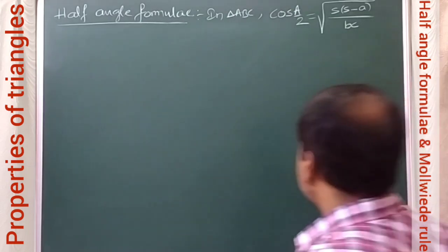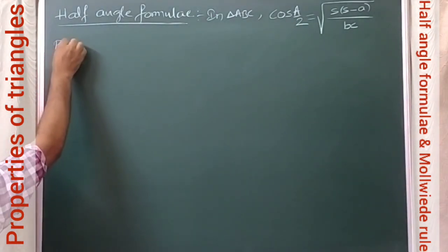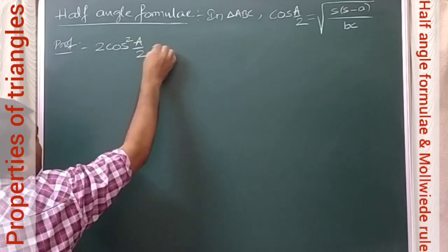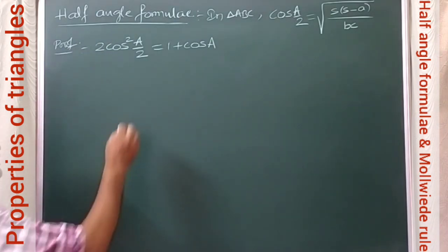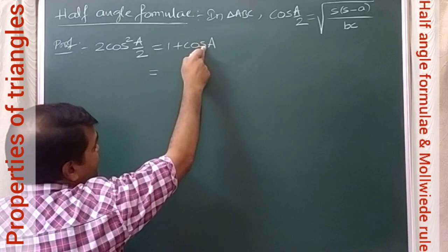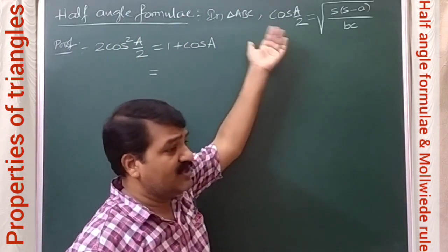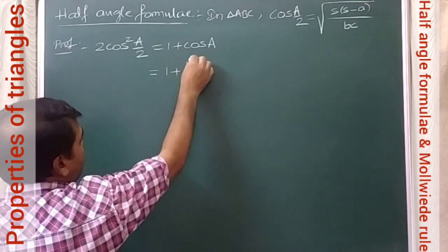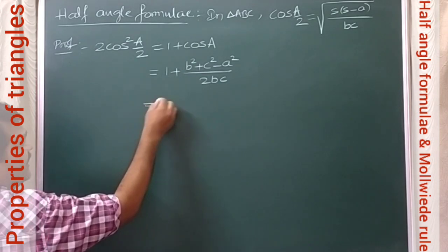To derive cos(A/2) = √[s(s − a) / bc], we consider 2 cos²(A/2) = 1 + cos A, which is a multiple sub-multiple formula of trigonometry. Using the cosine rule, cos A = (b² + c² − a²) / 2bc, and substituting: 1 + cos A = (2bc + b² + c² − a²) / 2bc.